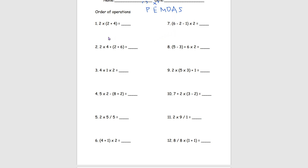Looking at problem number 1, we have 2 times (2 plus 4). We see we have 2 and 4 inside parentheses. Normally we wouldn't add these first because according to Order of Operations we have to do multiplication first, but since these two are inside the parentheses we do them first. So 2 plus 4 equals 6, then 2 times 6 equals 12. Our answer for number 1 is 12.